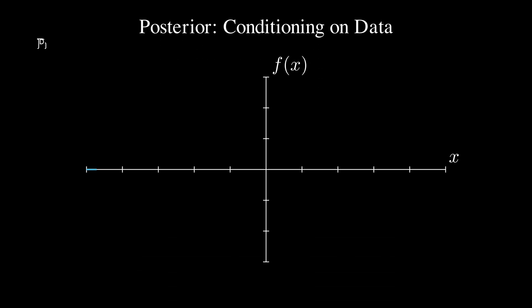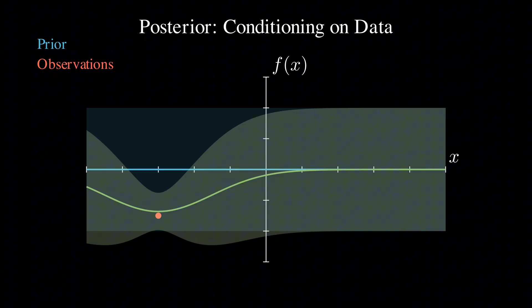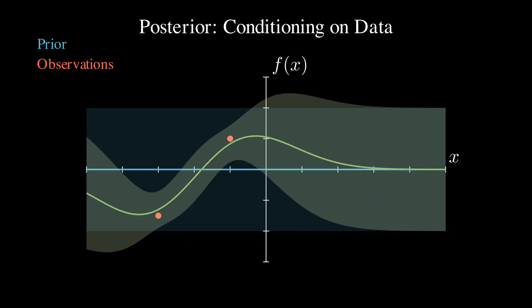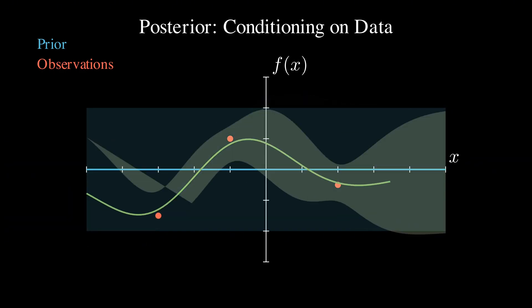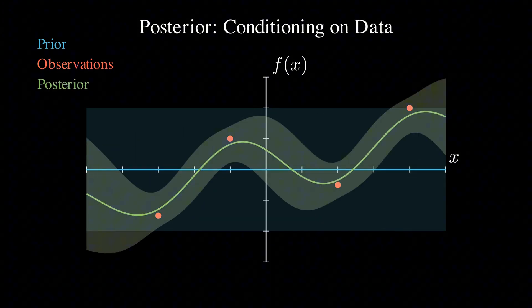When we actually observe some data points, things get really interesting. Watch what happens when I add this first red data point. Our distribution immediately changes to accommodate this new information. This updated distribution is called the posterior. Look at how the green line, our mean prediction, now passes right through our observation and the uncertainty bands shrink dramatically around that point. As I add more observations, one by one, our posterior keeps updating. The uncertainty is smallest near our data points and grows larger as we move away. This perfectly captures our intuition that we are more confident about areas we have observed and less confident about areas we haven't.